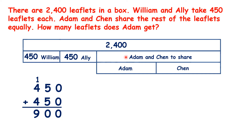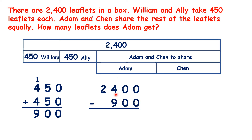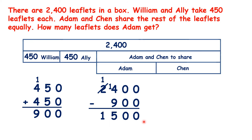So how can we work out how many leaflets there are for Adam and Chen to share? We need to work out 2,400 — the total number of leaflets — minus 900, the number that have been taken by William and Ali. That means we have 1,500 leaflets left.